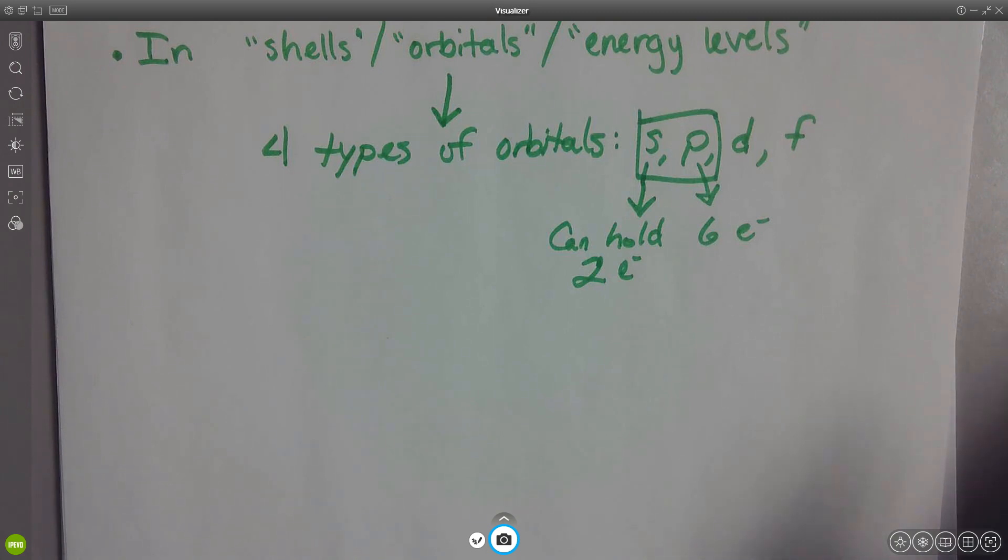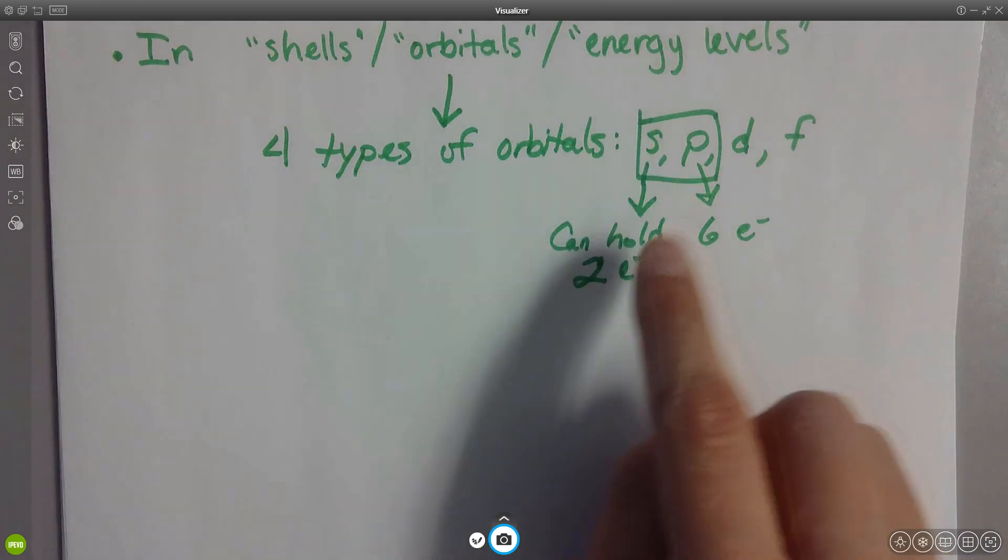So find element number one, which is hydrogen. Element number one has how many electrons, by the way? One. That's an easy question, right? It has one electron in its s orbital, in its smallest orbital. Now look over at helium. How many electrons does helium have? Two. That second electron gets put into the s orbital because the s orbital can hold two electrons.